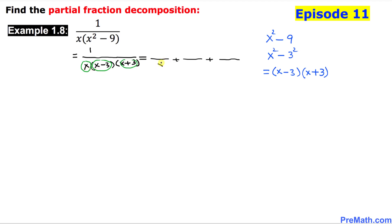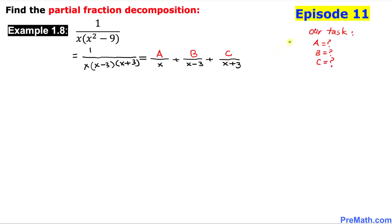The first linear factor x goes in the denominator of the first fraction, the second is x minus 3, and the third is x plus 3. On the numerators we put constant A for the first fraction, B for the second, and C for the third. Our task is to find the values of A, B, and C. Let's move on to the next step and focus on the denominator x times x minus 3 times x plus 3.